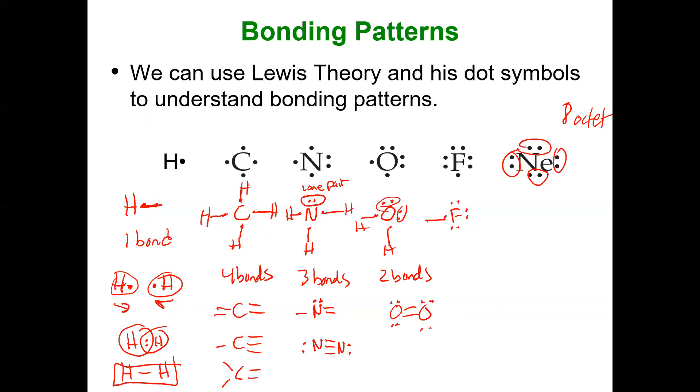And then we see fluorine likes to have one bond. Why? It's only one away from neon and having an octet. So it only needs to share one, like with hydrogen.